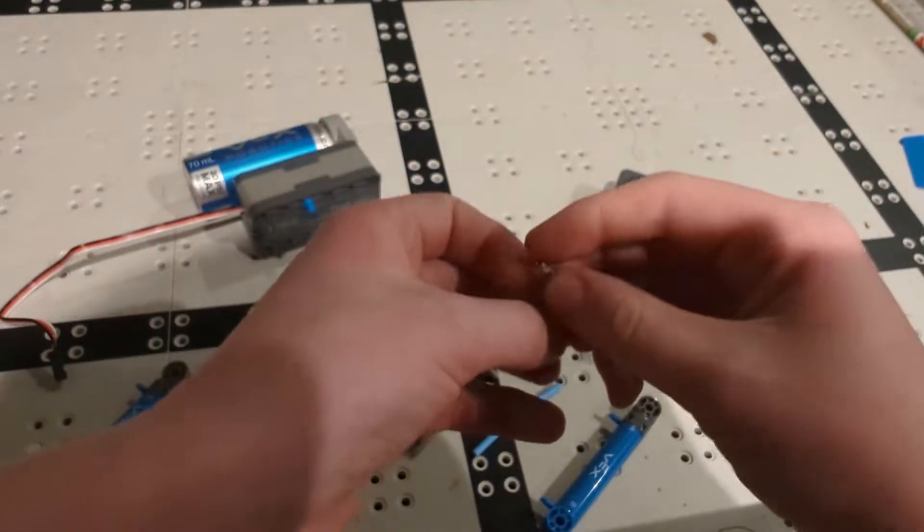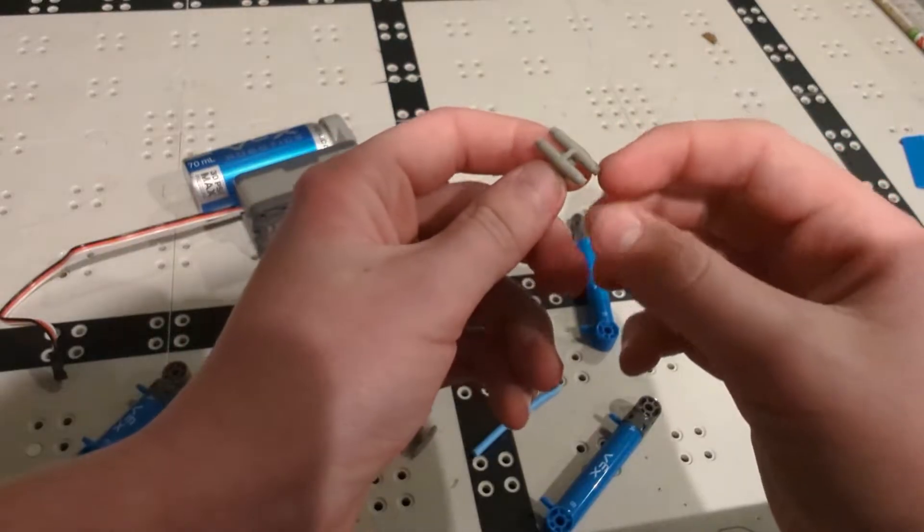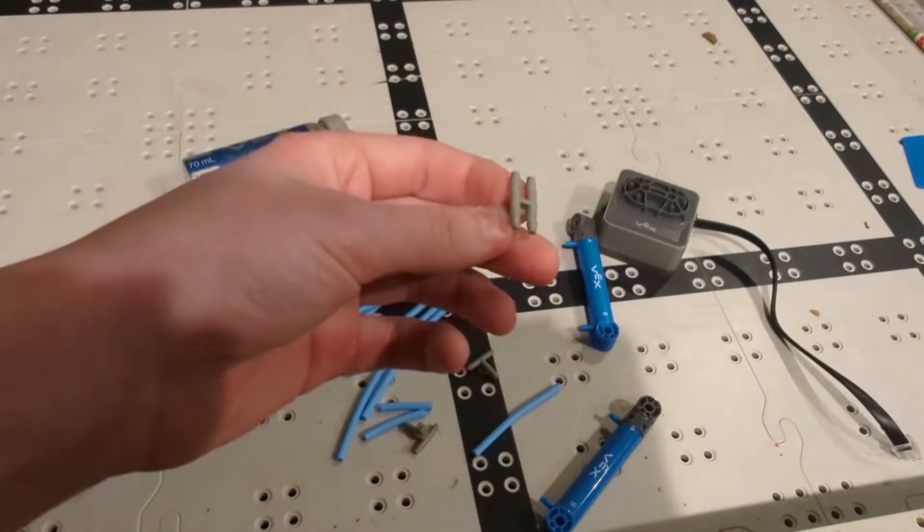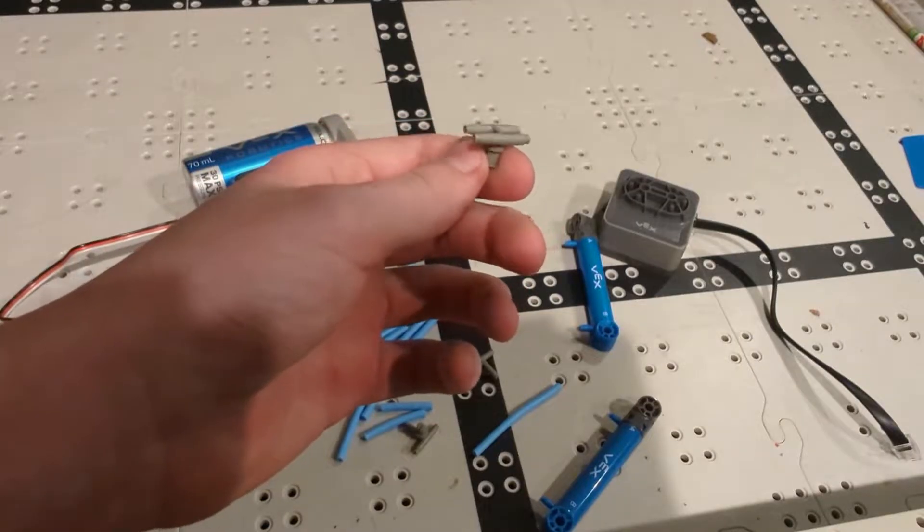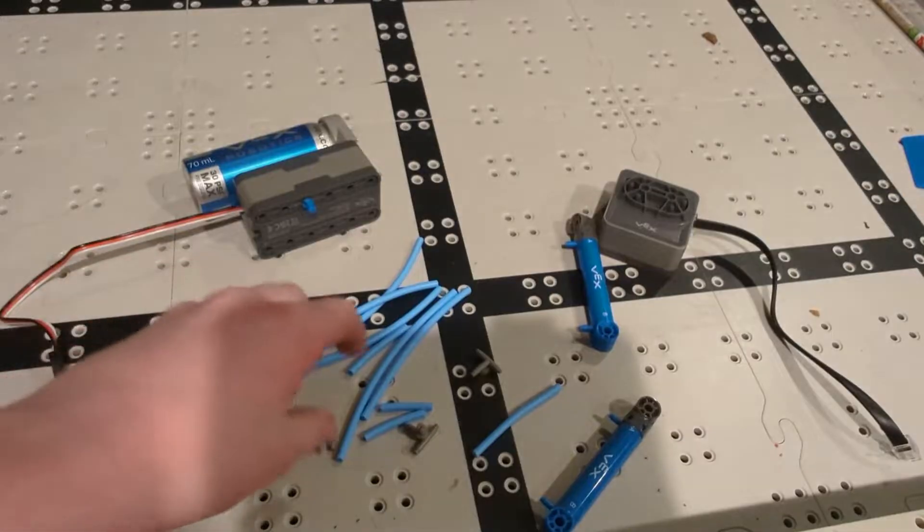There's also another type of tubing connector pieces, and it's this one. It just allows you to do different types of connections that you couldn't do with this one. And we've found that this one isn't as useful as the other one, but you could probably still find a use for it.